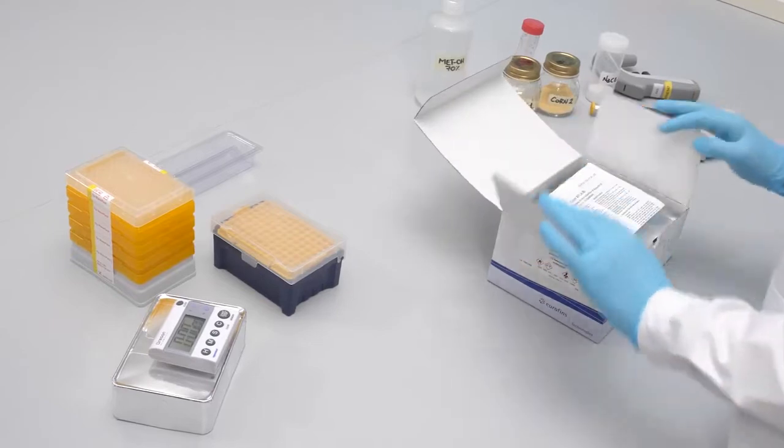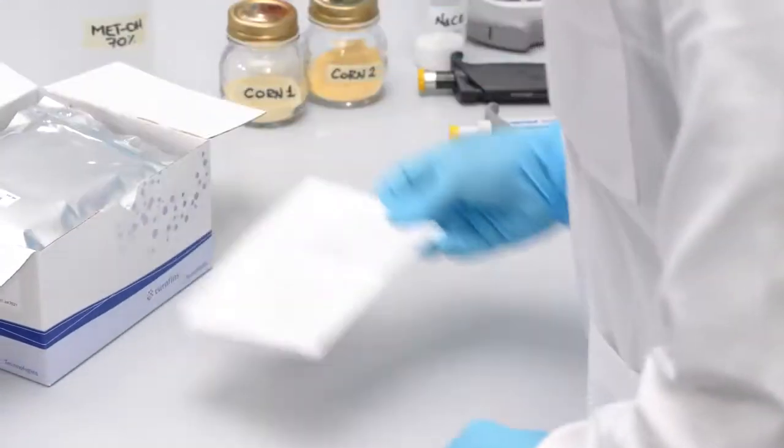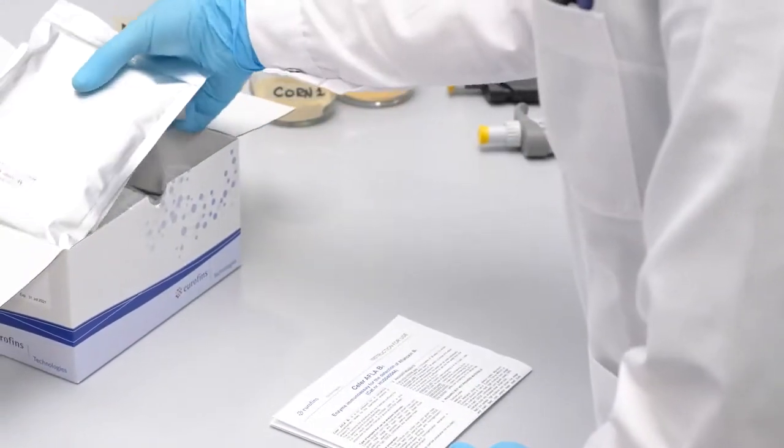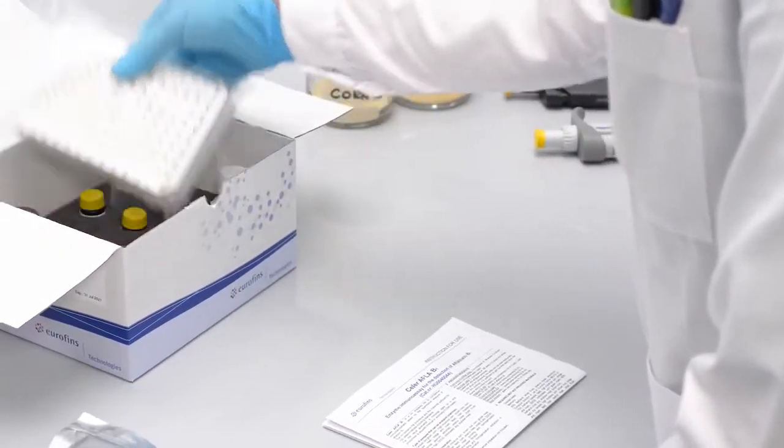Cellar Aflatoxin B1 is a fast, specific and sensitive ELISA test kit for the quantitative detection of Aflatoxin B1 in food and feed.